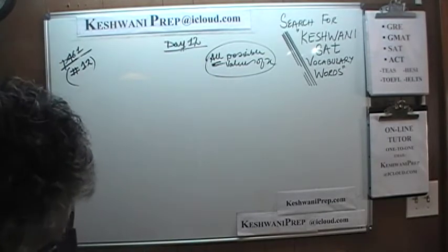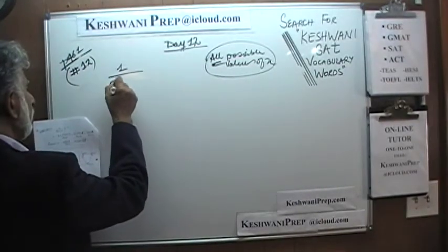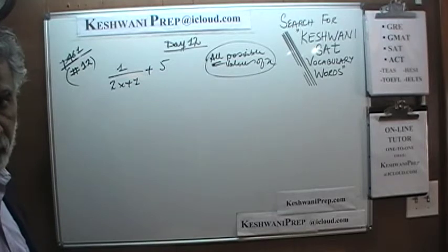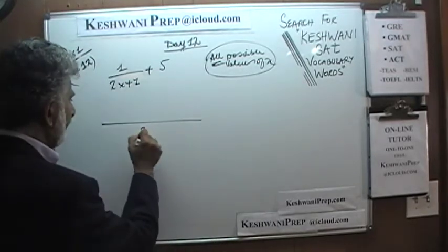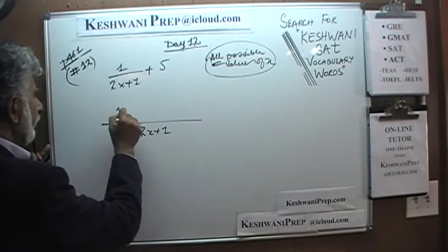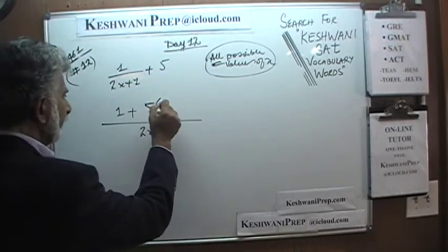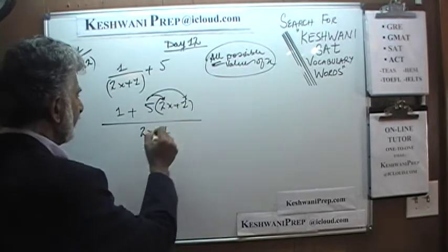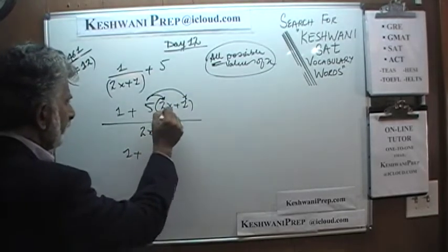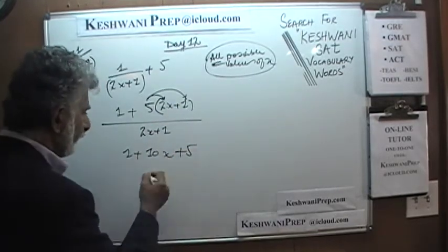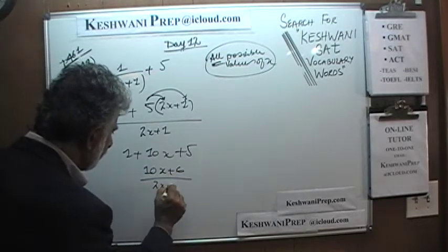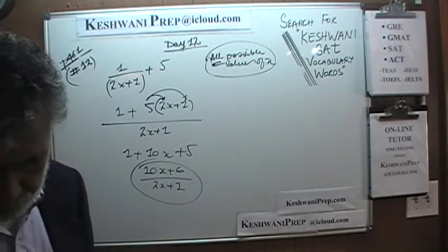Number 12 asks us to simplify 1/(2x+1) + 5. We find a common denominator of (2x+1). The first term stays as 1/(2x+1), and 5 becomes 5(2x+1)/(2x+1) = (10x+5)/(2x+1). Adding the numerators: 1 + 10x + 5 = 10x + 6. The simplified answer is (10x + 6) over (2x + 1). Nothing to it — very simple and straightforward.